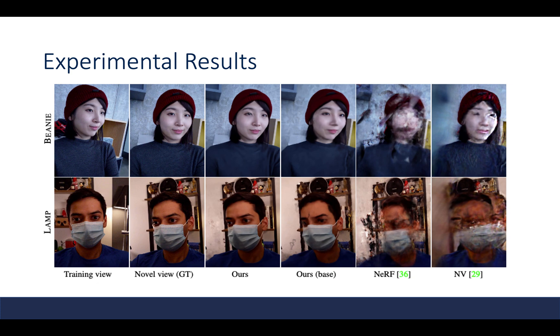This figure further demonstrates the advantage of Nerfies, where given the training view shown in the first column and the ground truth novel views shown in the second column, NeRF or neural volume methods in the fifth and sixth columns cannot render photorealistic novel views, while the Nerfies method in the third column can render photorealistic results.